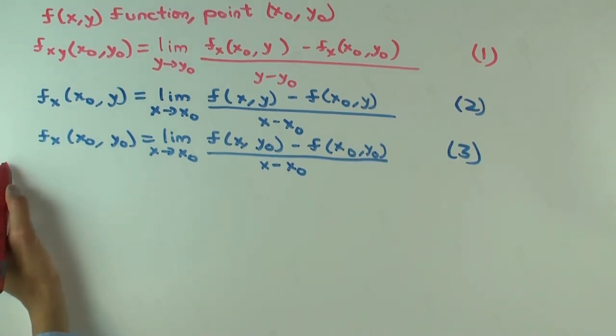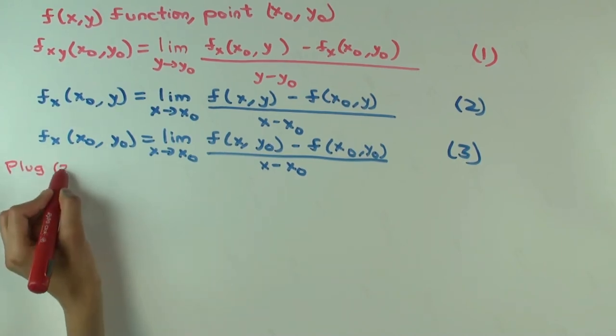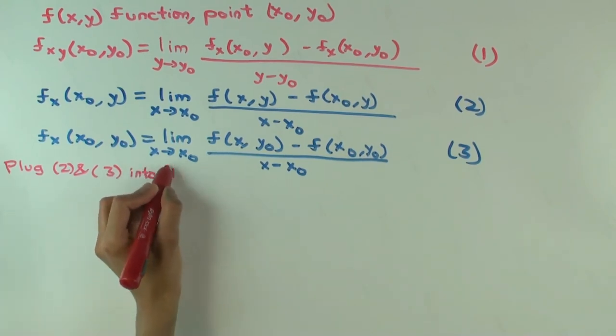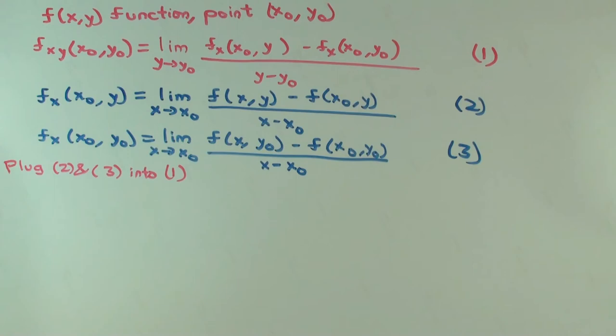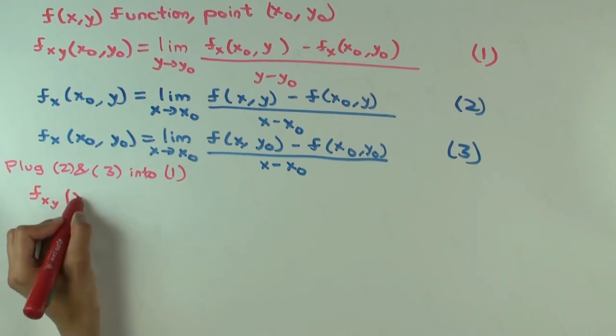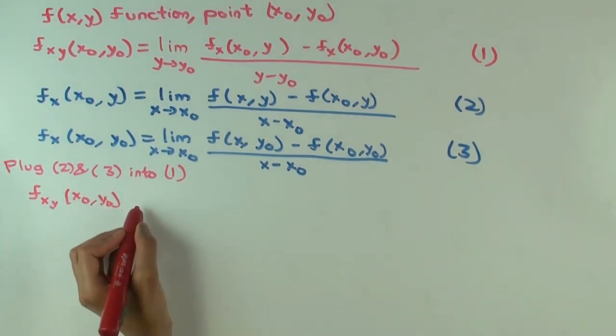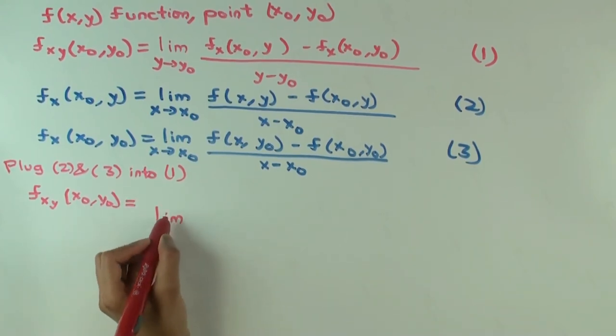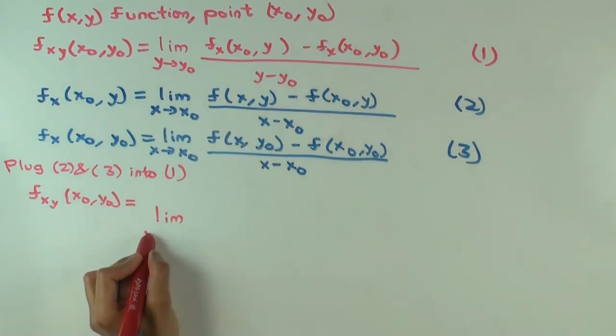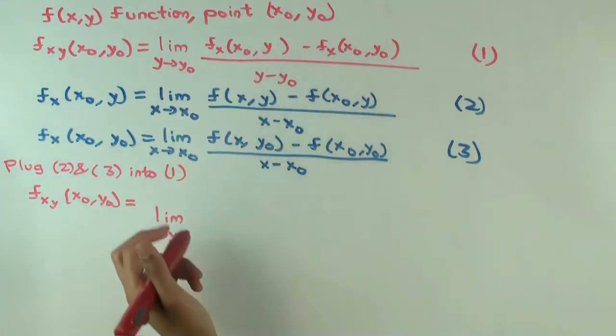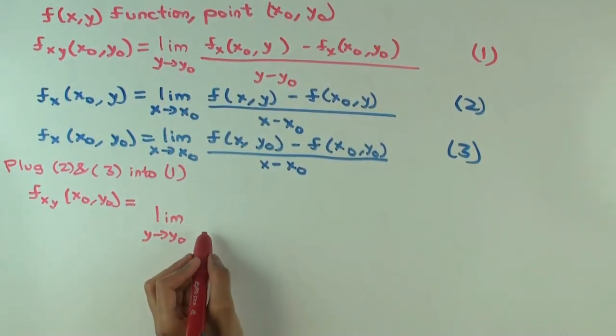What do you get? You'll get f sub xy of (x0, y0). Now this is a big thing. So it's limit as y approaches y0. What are we doing? We just copy down 1 and wherever we see these expressions, we plug in the expressions from 2 and 3. So overall, what's the big denominator?